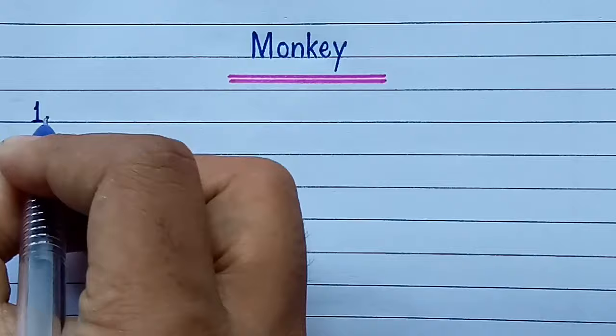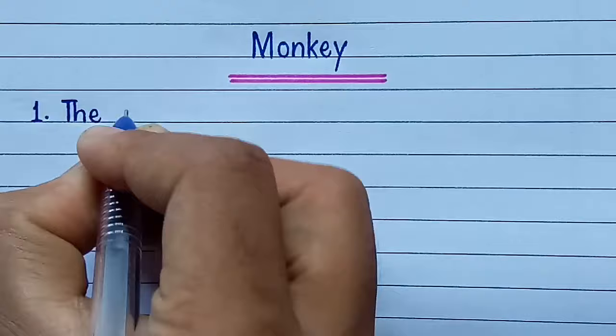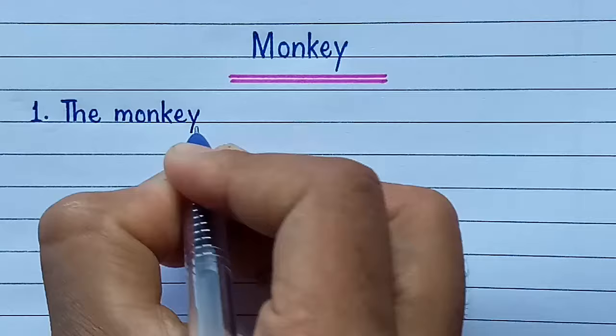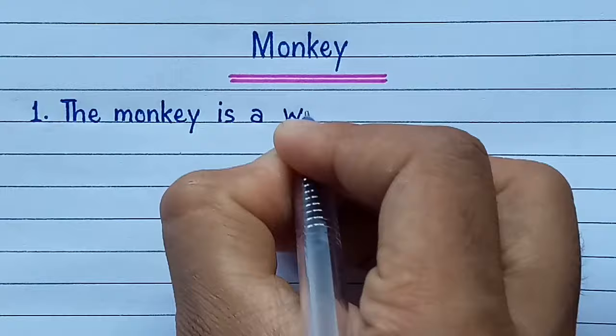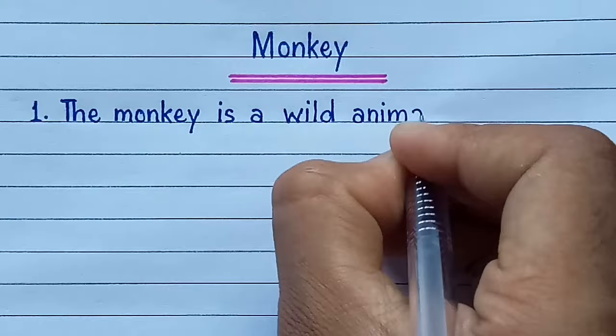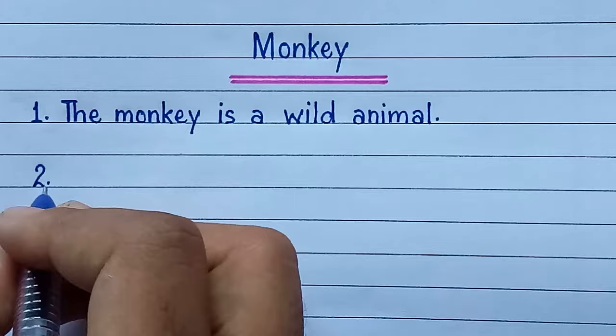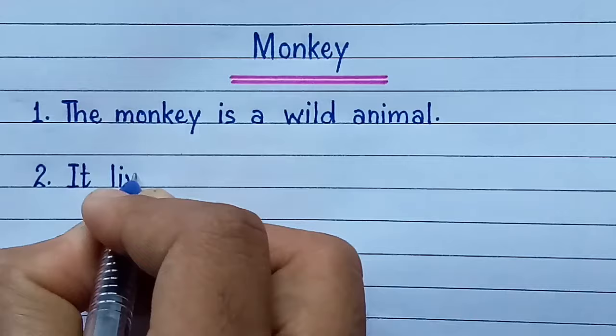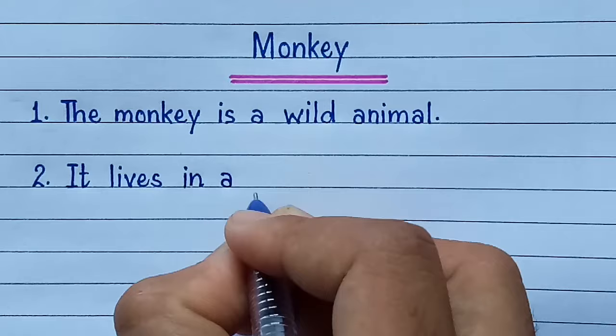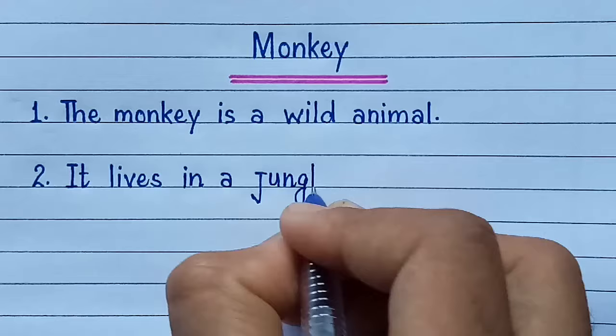The first line is: The monkey is a wild animal. Second line is: It lives in a jungle.